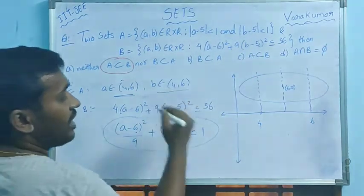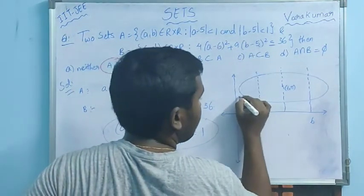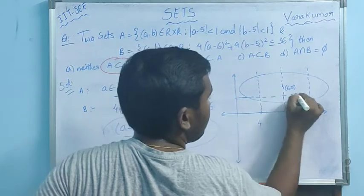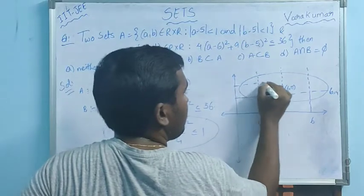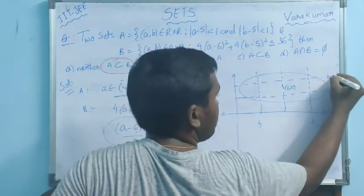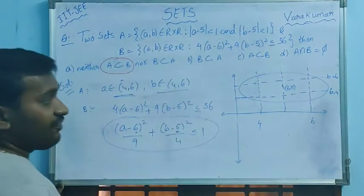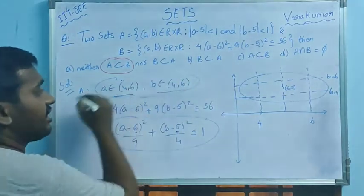B value we got in (4,6), here also same thing on the y-axis you take it. B value as 4 and here b value 6. So the combined figure for this one, which is the region which is a region between here, this is set A represents.